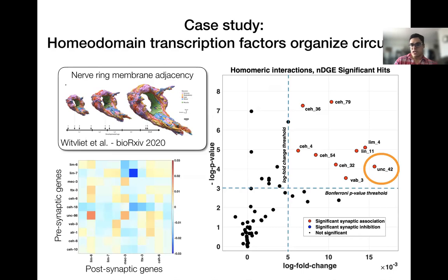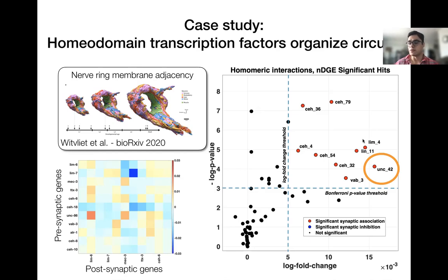Now that we have established the computational tool to link gene expression to connectivity, we apply it to study the role of homeodomain transcription factors as terminal selectors for circuit organization. We utilize the nerve ring connectome of 84 neuron classes and the expression of 78 homeobox transcription factors captured by CENGEN. Running this analysis yields 10 transcription factor targets that survive false discovery rate. We focus on the one with the highest fold change, which is the transcription factor ONG-42.